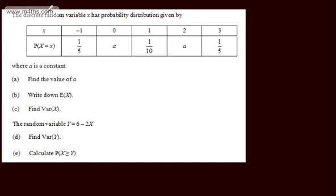In this video, we're going to do two exam-style questions on discrete random variables. In the first one, we're told the discrete random variable x has probability distribution given by values of x from negative 1 to 3 and the associated probabilities. We're told a is a constant, and in part a we're asked to find the value of a.